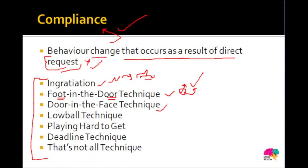Door-in-the-face technique is the complete opposite. Here, you start with an extremely large request that you know the other person will definitely reject — like asking them to buy a pen, diary, and many other things all at once. Of course they refuse. Then you put forward a seemingly small request — which was actually your original request — like 'okay, then at least take this one pen drive.' The person, having already refused once, feels inclined to comply with what seems like a small request. So: door is bigger than face — start with the big request, then come down to the small one.